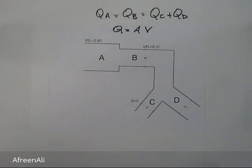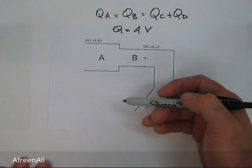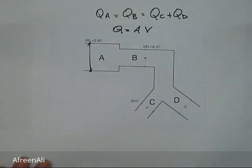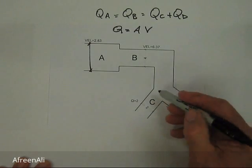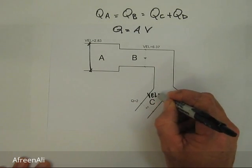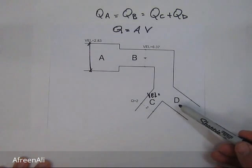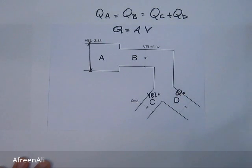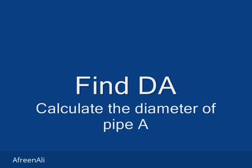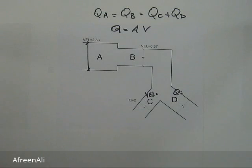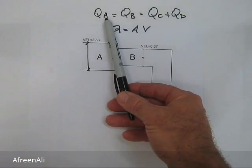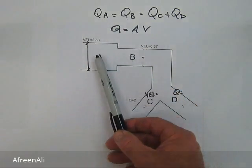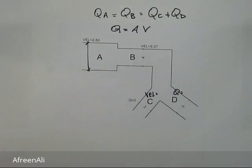Given this information in the diagram, we're asked to find the diameter at A, the velocity at C, and the flow rate at D. Using our formula, the flow rate at A equals the flow rate at B, so we need to find the diameter at A. Let's write that formula out to the side.